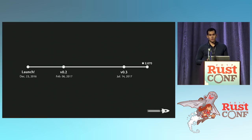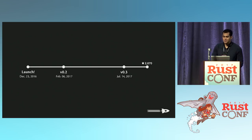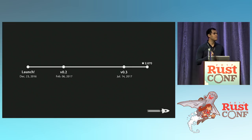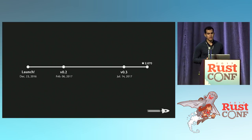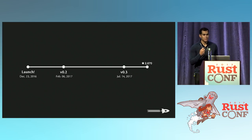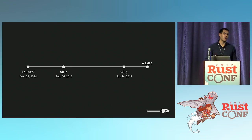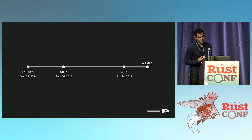How did we get to Rocket? This is the timeline, and every time I do a talk on Rocket, this timeline gets wider, which is nice. Rocket launched about eight months ago, and shortly thereafter there was version 0.2, which brought a bunch of nice stuff. About five months after that there was version 0.3, just last month. It's gained awesome traction — at least thousands of users and a couple dozen companies using it.